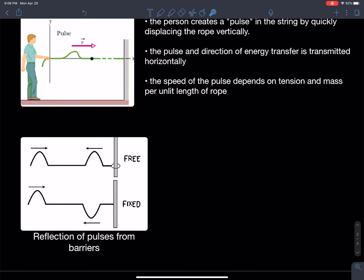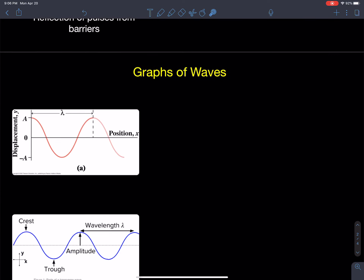When reflecting pulses off a wall: if you have a free end — like a little loop on the wall instead of being tied — the pulse reflects back exactly the same way it came in, without flipping. On the other hand, if the rope is tied and attached to the wall, when you send the pulse it reflects back in the opposite direction. That's what we know about wave pulses in strings.